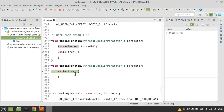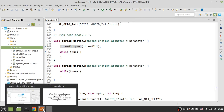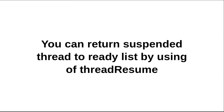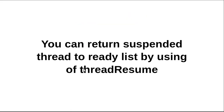At this time the RTOS just runs thread function two. But how can I return thread one to the ready list and run it again? By using another system call — the thread resume system call — you can return a suspended thread to the ready list.